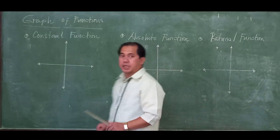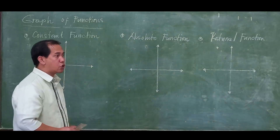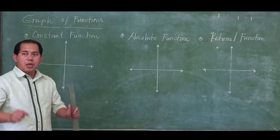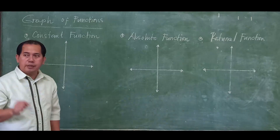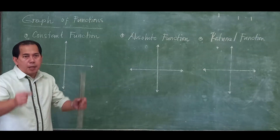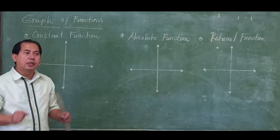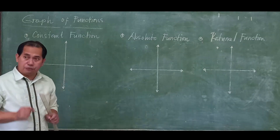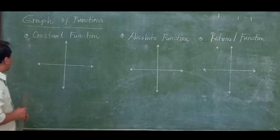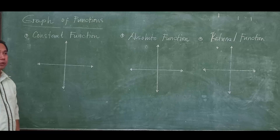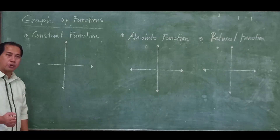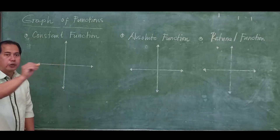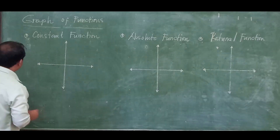The first function we will now look at is the constant function. When we say constant function, the graph is always a horizontal line. The graph will always be a horizontal line.